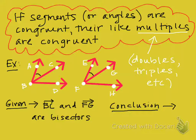And here's another example using angles to demonstrate this theorem. We have two angles, and it looks like angle ABC is congruent to angle EFG because of those arcs. We also know from the given that ray BC and ray FG are both bisectors.